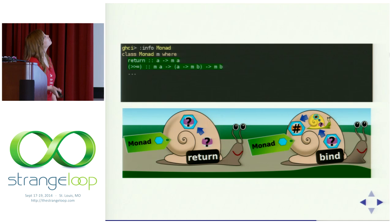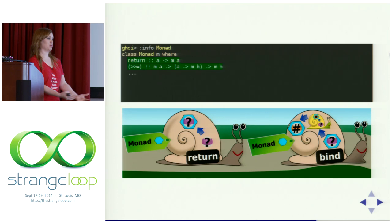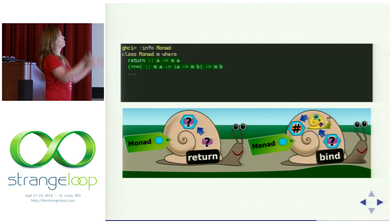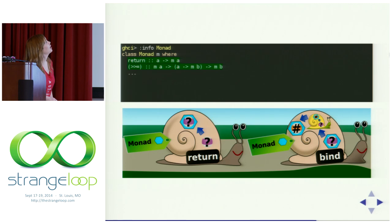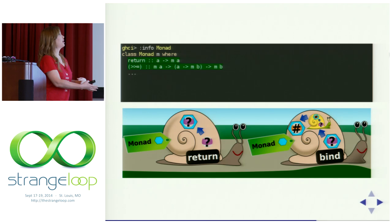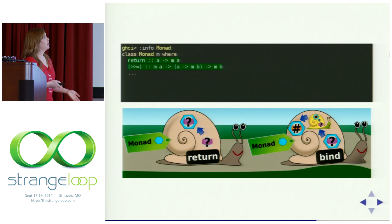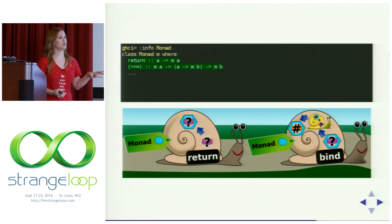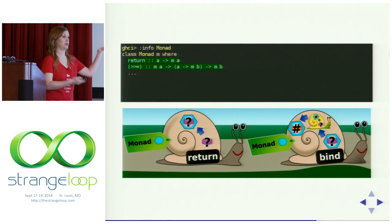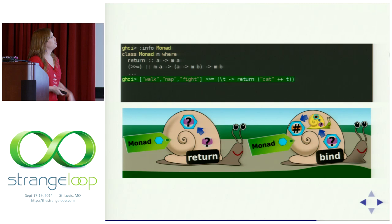Return takes a generic value and puts it into the monadic context — wrapping it in the minimal context that still yields that result. Bind takes a monad of type A, a function from A to a monad of type B, and gives us a monad of type B. This looks similar to fmap — only now instead of going from A to B, we go from A to M of B, and the order is flipped. That's the key difference between functor and monad.